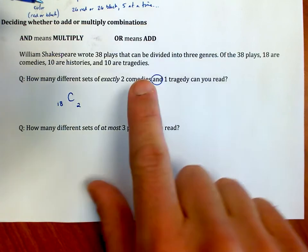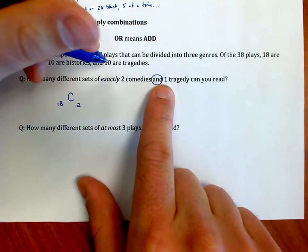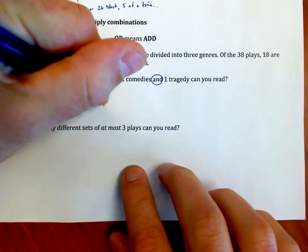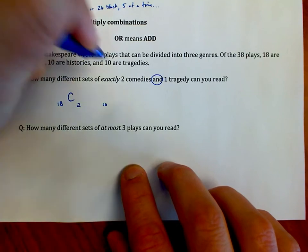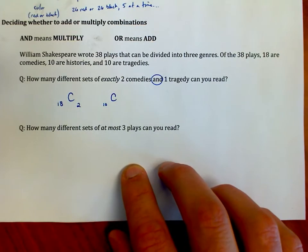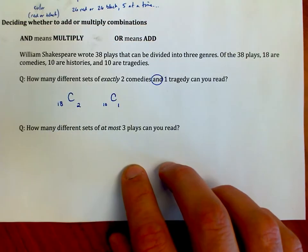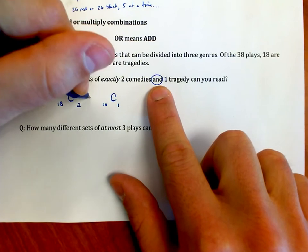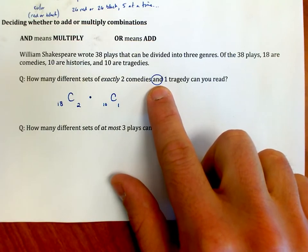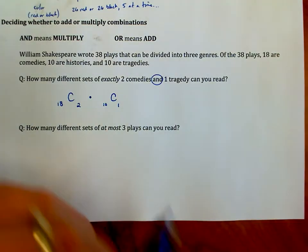But then I also have to meet the requirement of reading one tragedy. Okay, so I have 10 tragedies to choose from. It doesn't matter which one I read first, and since I'm only reading one, that's almost nonsensical, isn't it? I'm going to choose one at a time. I'm going to take these values because I need to meet both requirements at the same time. I'm going to multiply together.